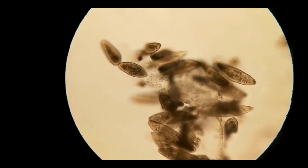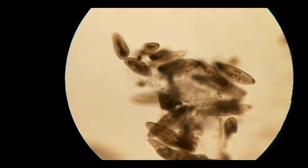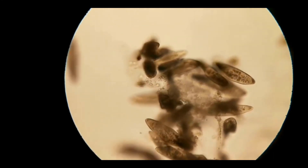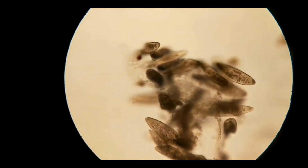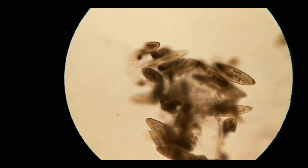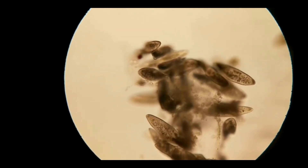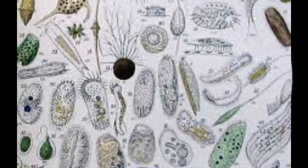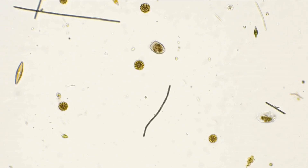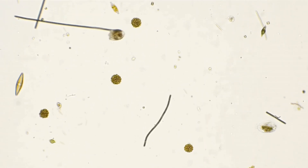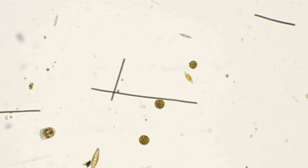As a ciliate, paramecium moves by employing many cilia, which resemble hairs. It is recognizable by its distinctive shape, like a slipper or shoe, and its quick, synchronized ciliary activity. Species differences in infusoria's size and shape can be significant — they could have an uneven, elongated, or spherical shape.